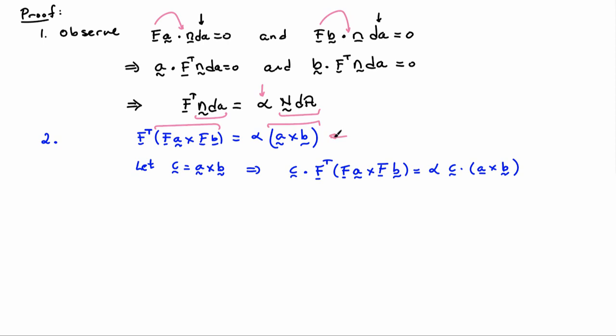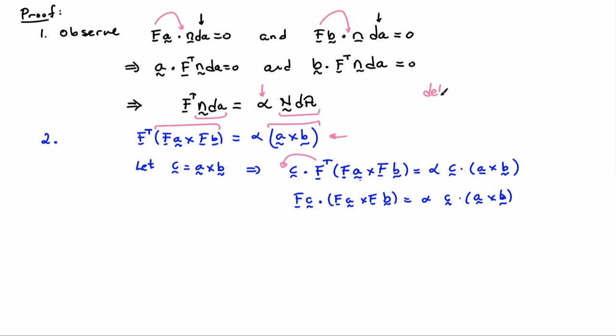Dotting both sides with C gives me C dotted with F-transpose (FA cross FB) equals alpha times C dotted with (A cross B). Moving F onto the other side using the definition of the transpose gives me FC dotted with (FA cross FB) equals alpha times C dot (A cross B). This is really just the definition of the determinant, because the determinant of F equals the scalar triple product of FA, FB, FC divided by the scalar triple product of A, B, and C, as long as A, B, and C don't lie in the same plane — which holds here since I chose C to be A cross B. This tells me that alpha equals the determinant of F.